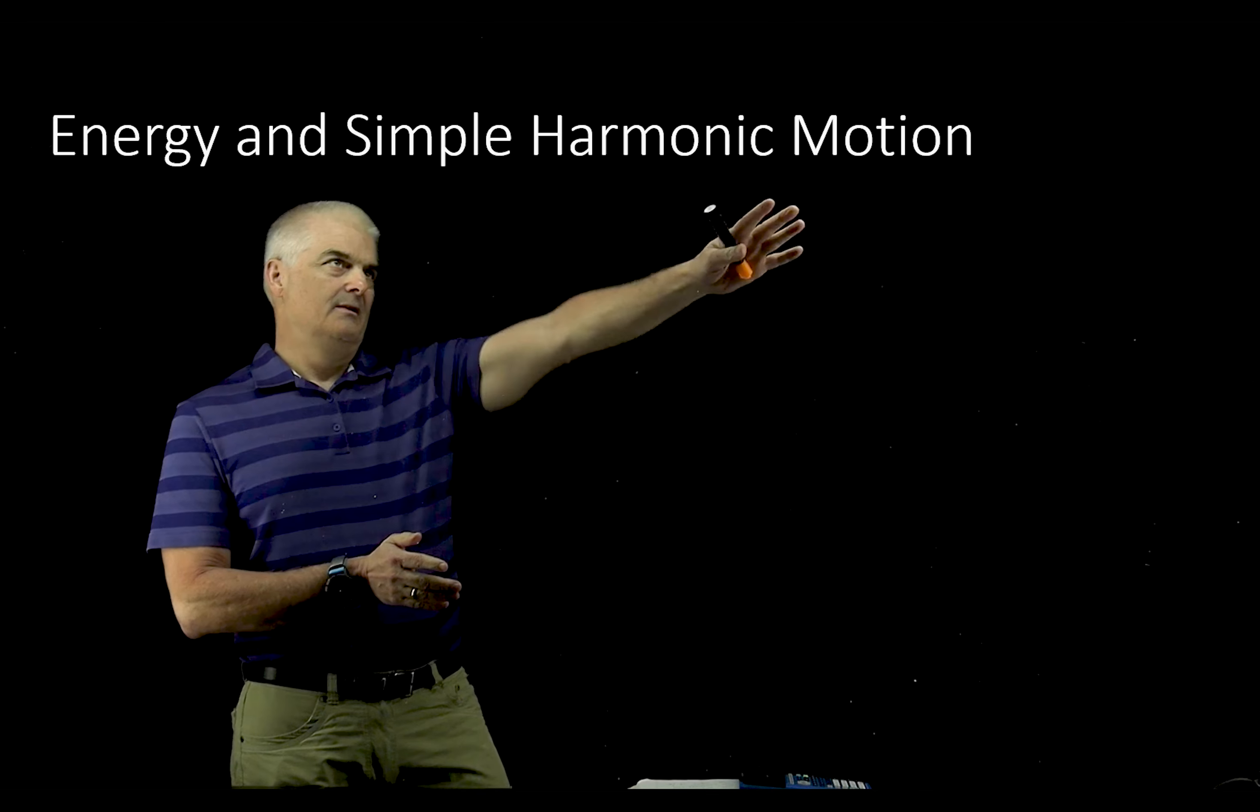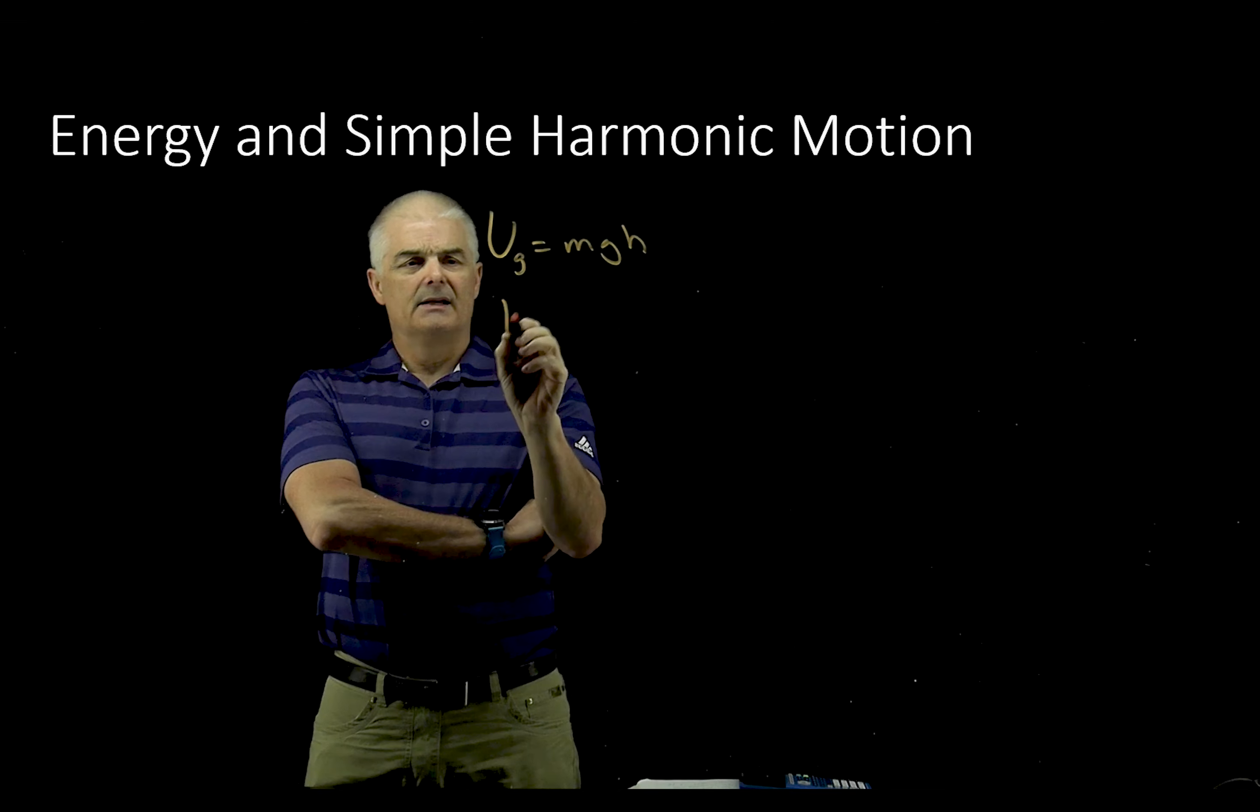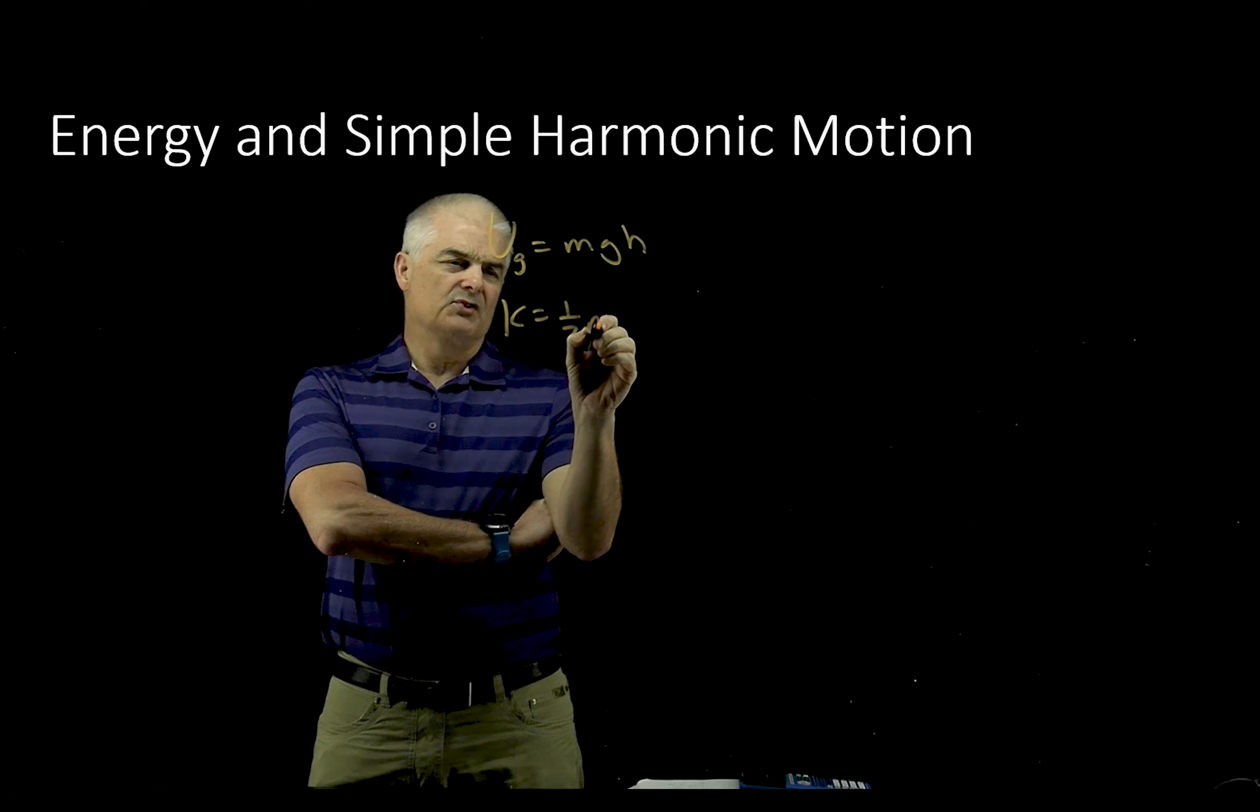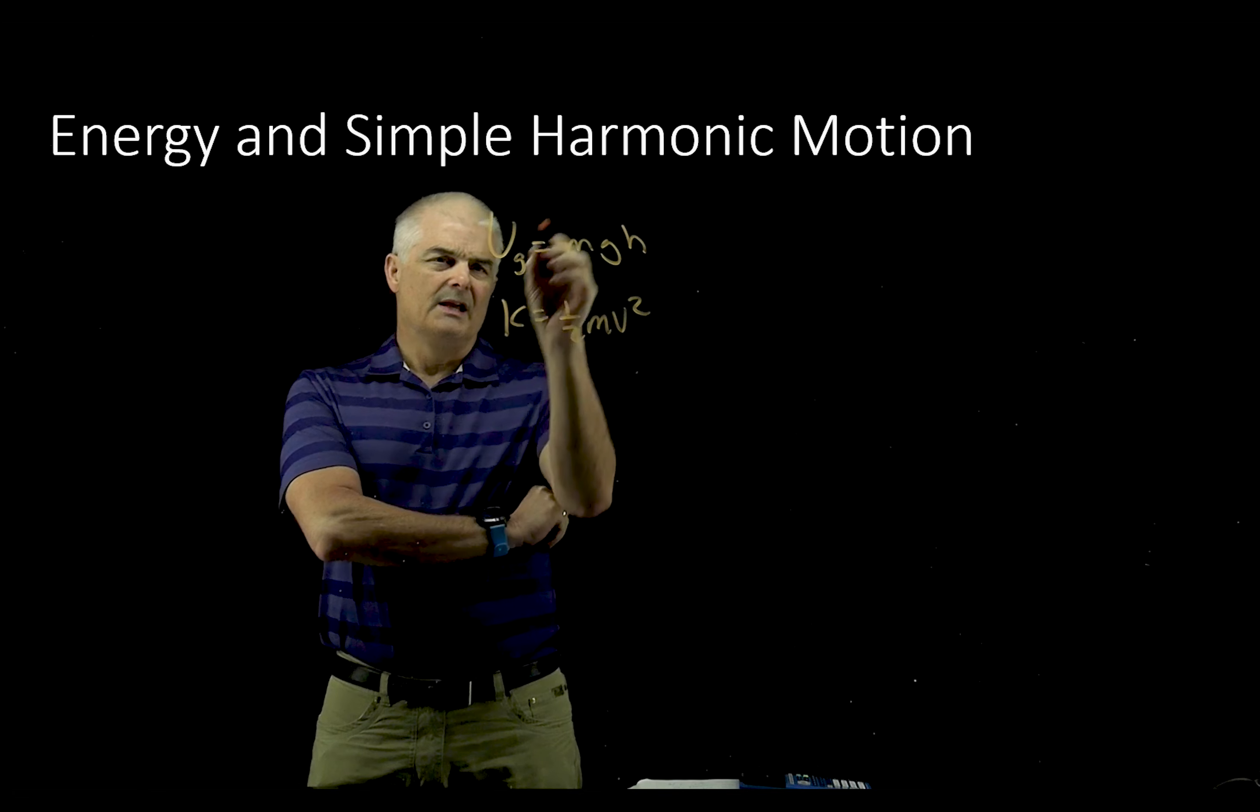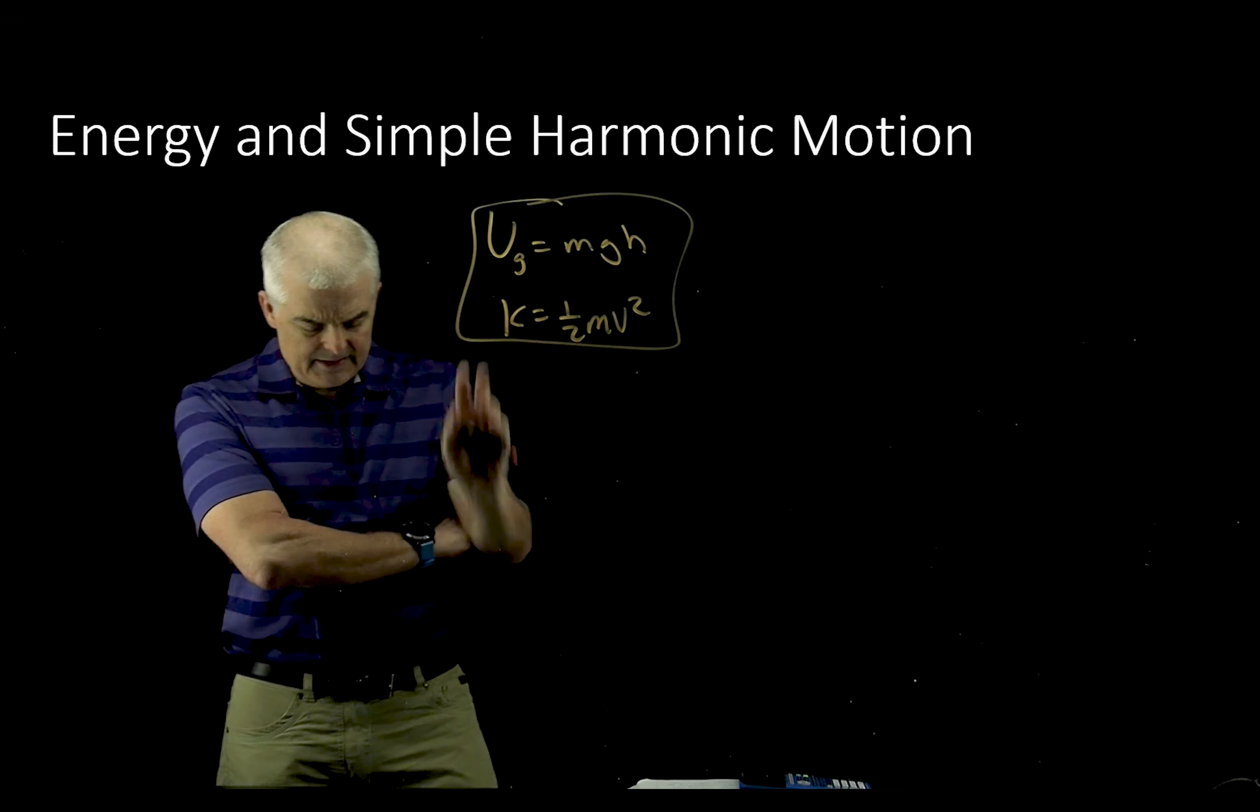Today we want to talk about energy and simple harmonic motion and how that works. When we talk about energy, there's two kinds of energy: potential and kinetic. Potential energy, if you think about it in our old way, was gravitational energy, mgh, and kinetic is one half mv squared. But when we talk about harmonic motion, these equations are similar to what we want, but not exactly.